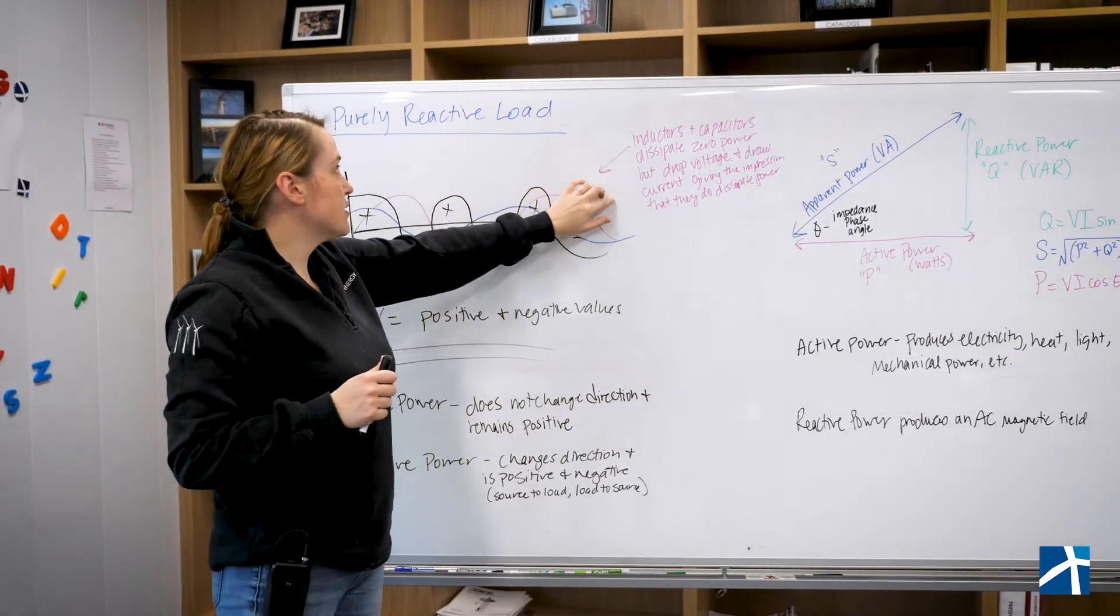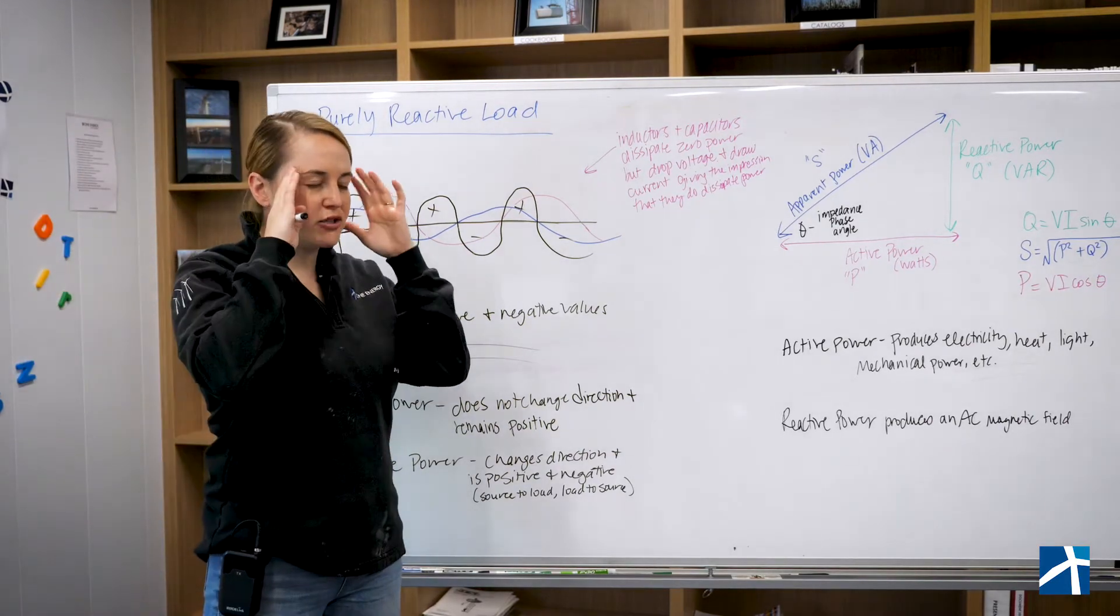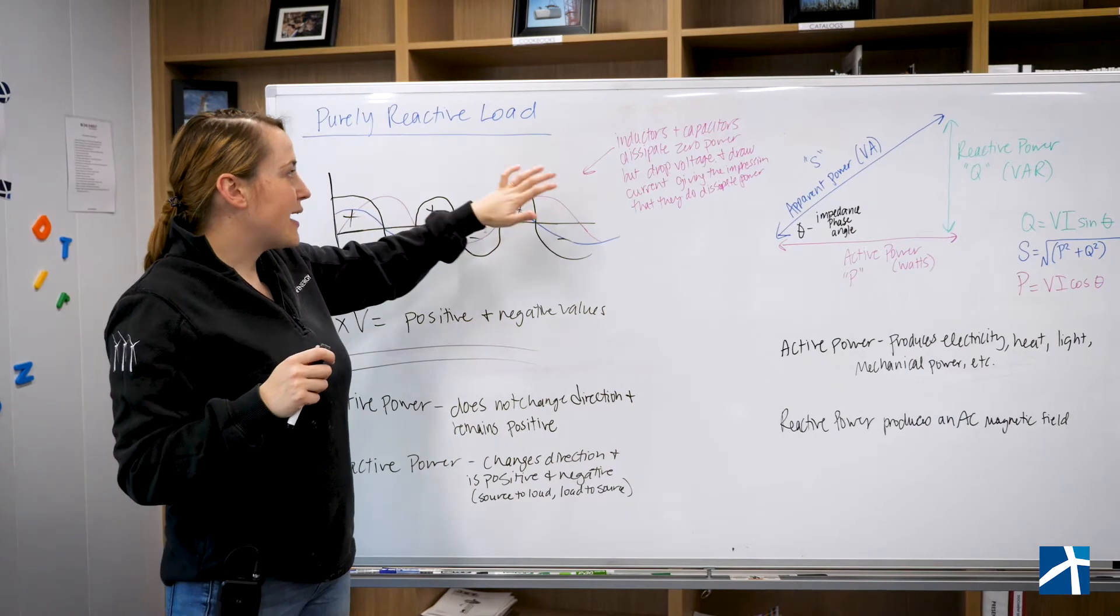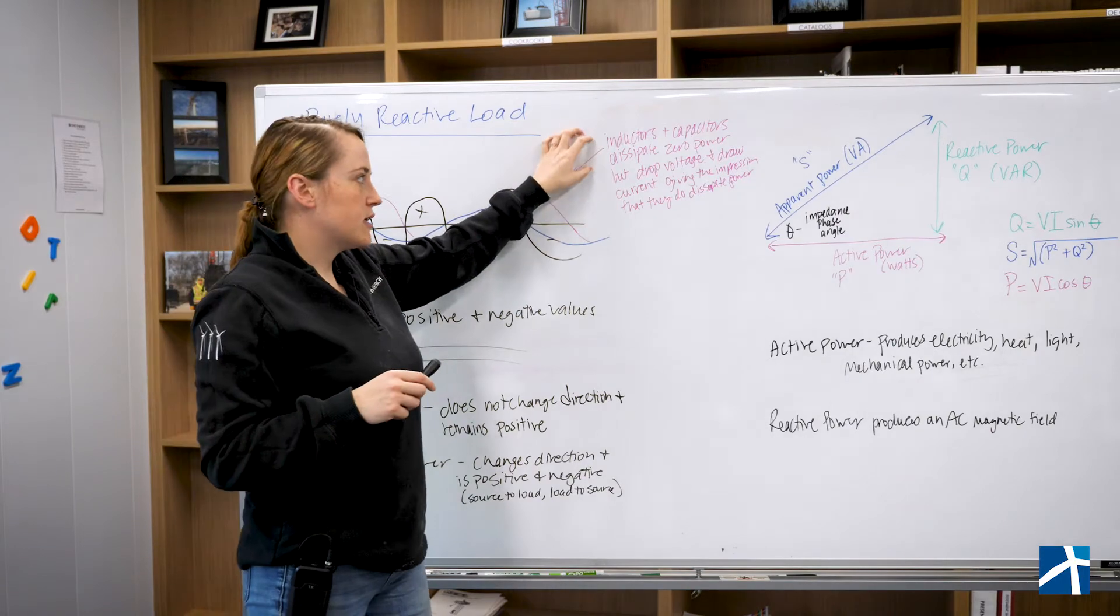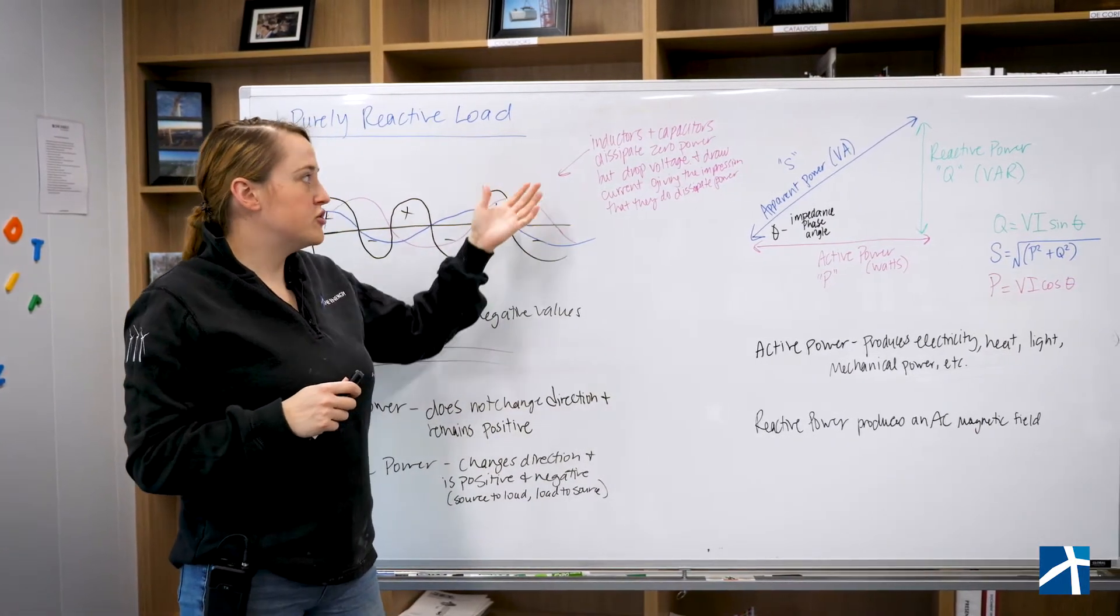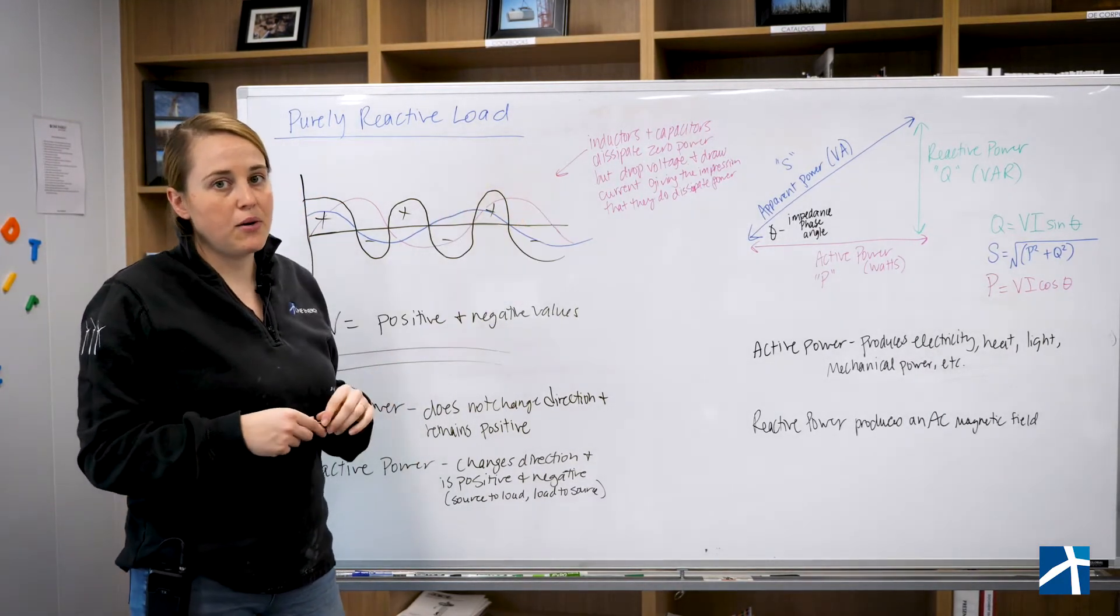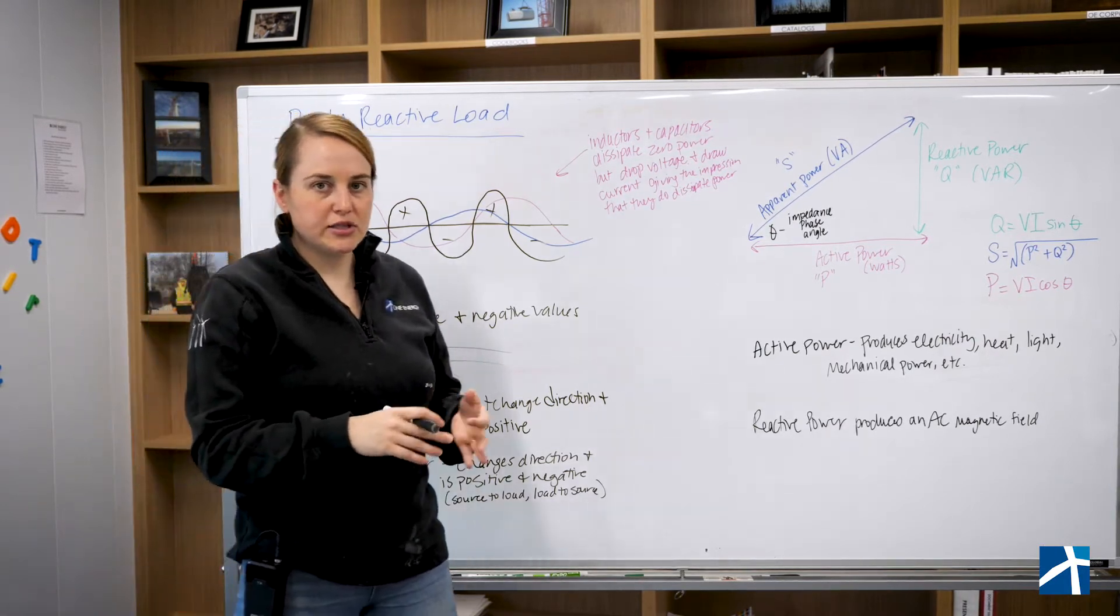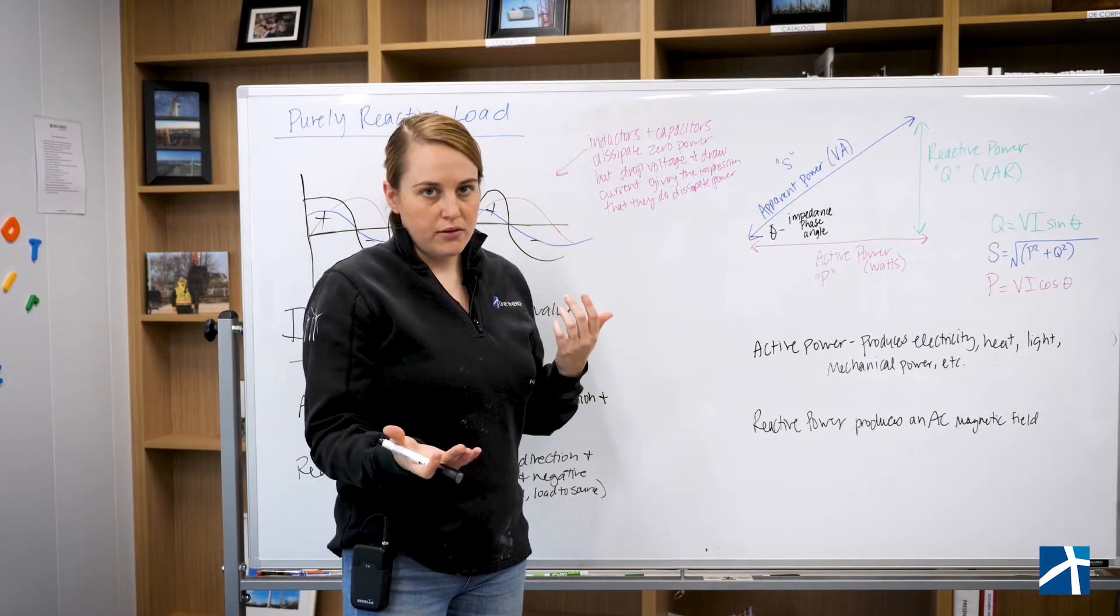So examples of some reactive loads that you're going to see, active power is a lot easier to visualize, a lot easier to think about. But reactive power is not. So when we talk about reactive power, we're talking about things like inductors and capacitors that dissipate zero power, but drop voltage and draw current, giving the impression that they do dissipate power. And so when we're talking about these things, reactive power motors, capacitors, inductors, those are all common examples of things that draw reactive power.